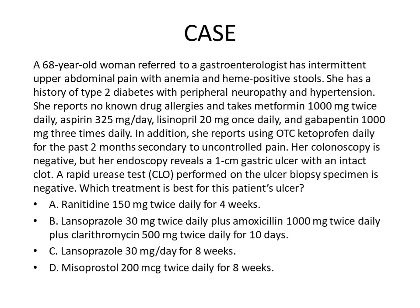She also reports using OTC ketoprofen for the past two months secondary to uncontrolled pain. Her colonoscopy is negative. Endoscopy revealed a 1 cm gastric ulcer with intact clot. The rapid urease test performed on the ulcer is negative. The patient has a peptic ulcer with H. pylori test negative, so she has a ketoprofen-induced ulcer. Treatment involves a proton pump inhibitor; lansoprazole 150 mg twice daily for 4 weeks is effective, though side effects must be considered given her age of 68.